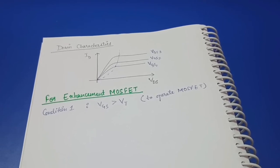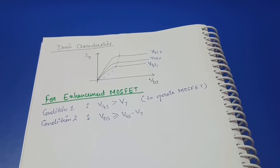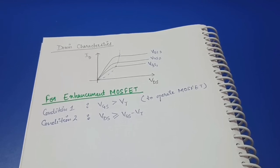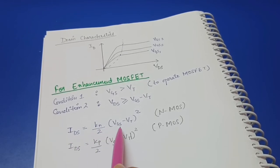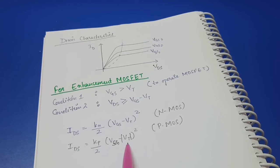For enhancement MOSFET operating in saturation region, there are two conditions. First, VGS must be greater than VT, the threshold voltage. Second, VDS must be greater than or equal to VGS minus VT. When the MOSFET is in saturation region it works as an amplifier, and the drain current is given by: ID = (KN / 2) * (VGS − VT)^2. This formula is for NMOS; for PMOS the threshold voltage is negative, so the absolute value is used.